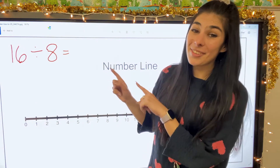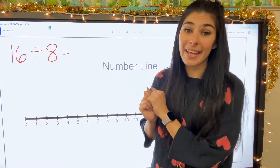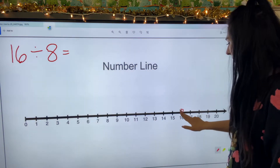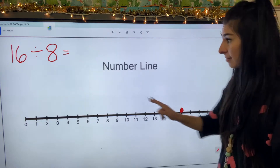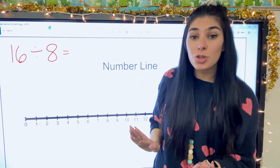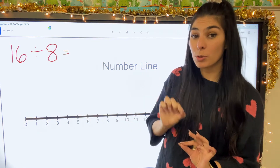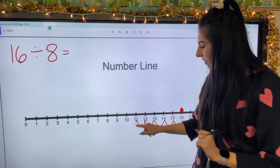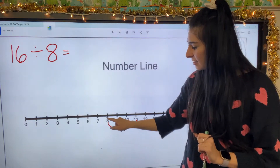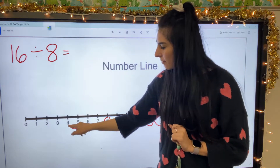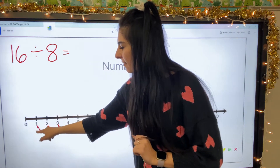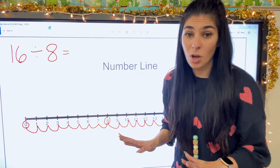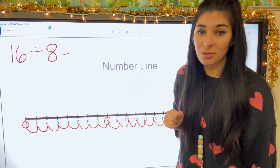Let's do one more. This time I have 16 divided by eight. So looking for my big dividend — 16, that's my starting point. So I'm going to come to my number line, there's 16. Divided by eight means that's how many little jumps I'm doing on the bottom, and then I'm going to circle that eighth number. So from 16, counting one through eight, circle; one through eight, circle. Landed it on zero.